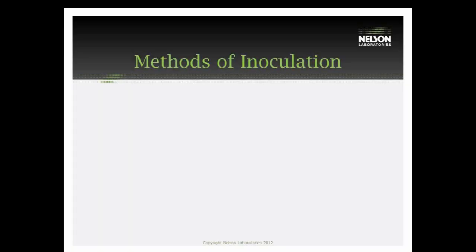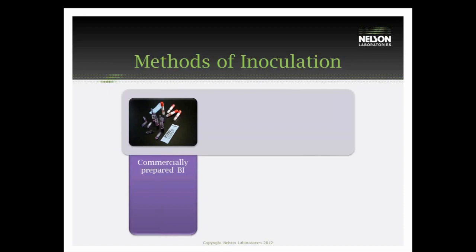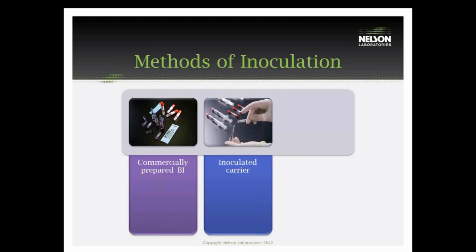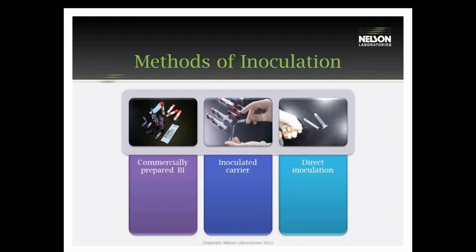There are three different methods of inoculation. We can inoculate using a commercially prepared BI, which is the method we prefer as it gives very consistent results. Sometimes, for example in tight lumens, it's difficult to get a BI in there, so we will use an inoculated carrier — we will inoculate a wire or suture and feed that into the device to represent those locations. In the event that we cannot use a BI or inoculated carrier, we can directly inoculate the device using a spore suspension. This is a destructive manner of testing because we will have to immerse the product for BI sterility testing if this method is used.